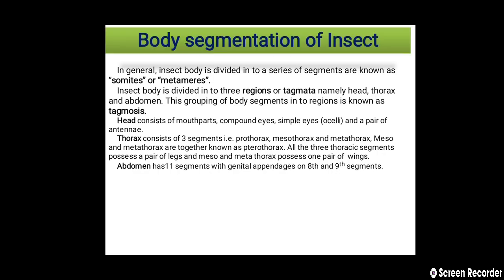In general, the insect body is divided into a series of segments known as somites, also called metameres. The insect body is divided into three regions or tagmata: namely the head, thorax, and abdomen. This grouping of body segments into regions is known as tagmosis.